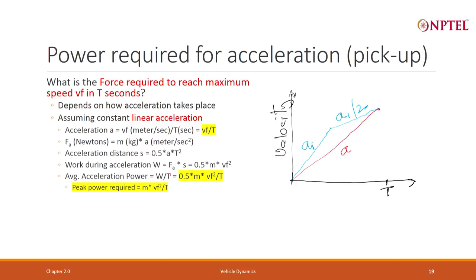Now, that is the average acceleration power. But when it reaches maximum velocity Vf, the peak power requirement will be mv²f divided by t. So it will be double the average.